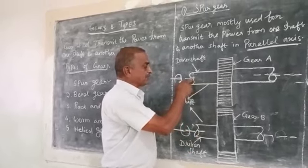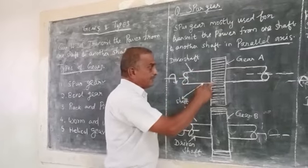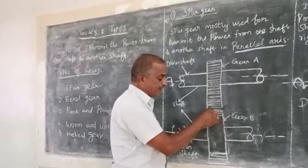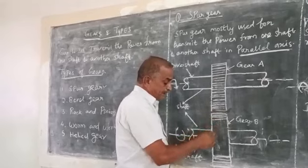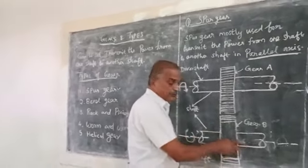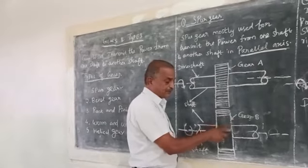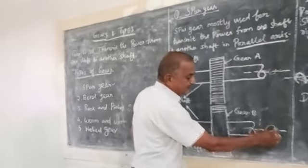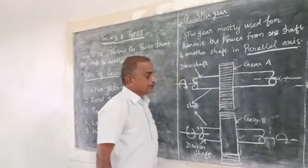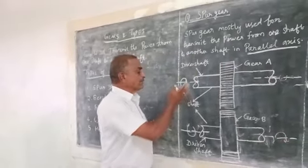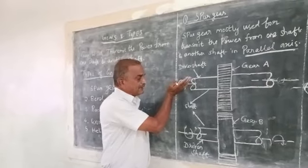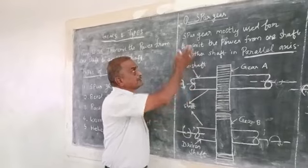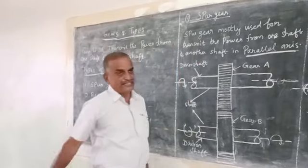If the driver shaft's gear A is meshing with gear B, now gear B is fixed with the shaft to rotate. So with the driver shaft giving rotation, we are using these spur gear arrangements.